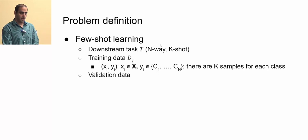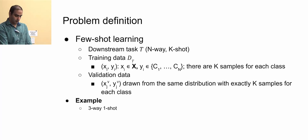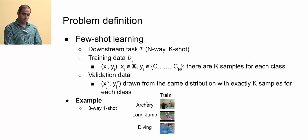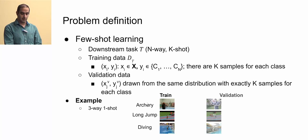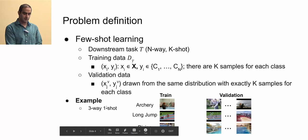The task also has a validation set drawn from the same n classes with k samples each. For example, a three-way one-shot task has three classes — archery, long jump, diving — with just one training example per action. The validation set has different instances of the same classes. In the train set you have just one instance per class, because this is a one-shot task.